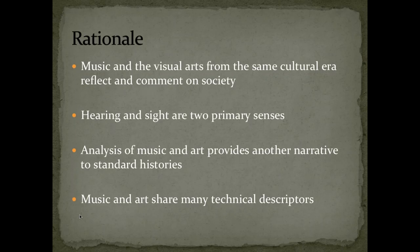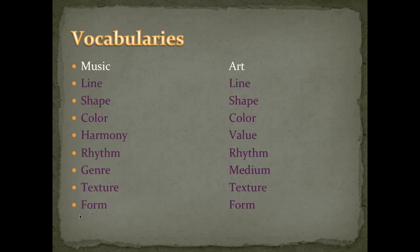Analyzing Music and Art is fun, and it provides another narrative to the kind of history that you generally learn — military and political history, maybe economic history. But music and art touch on those things as well, and so this is another way of creating a narrative for the past. Also, music and art share many technical descriptors. I pulled some terms out that are part of the vocabulary of both disciplines, and you can see a lot of correlation, although they don't always mean the same thing in each area. Terms like line, shape, and color — in music, color would relate to the kinds of instruments you're hearing and what range they're playing in.